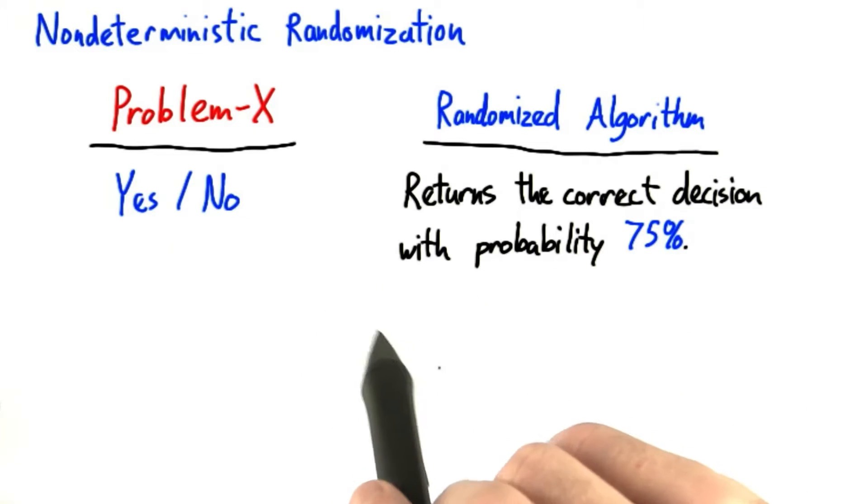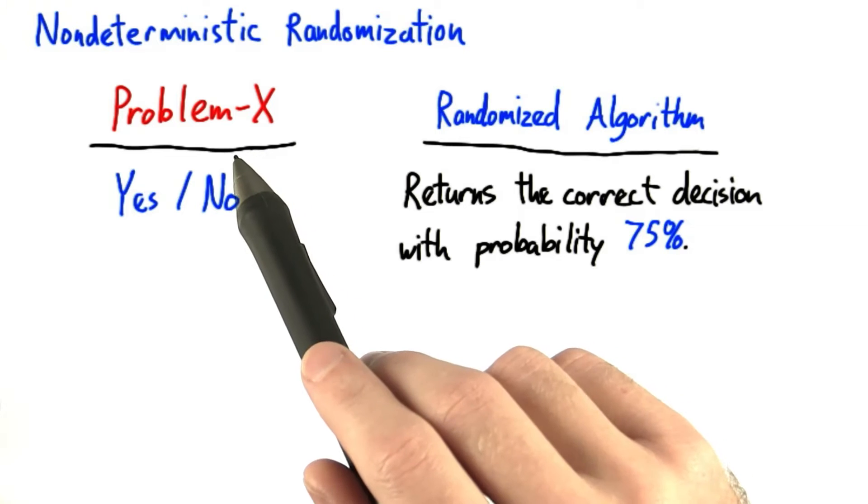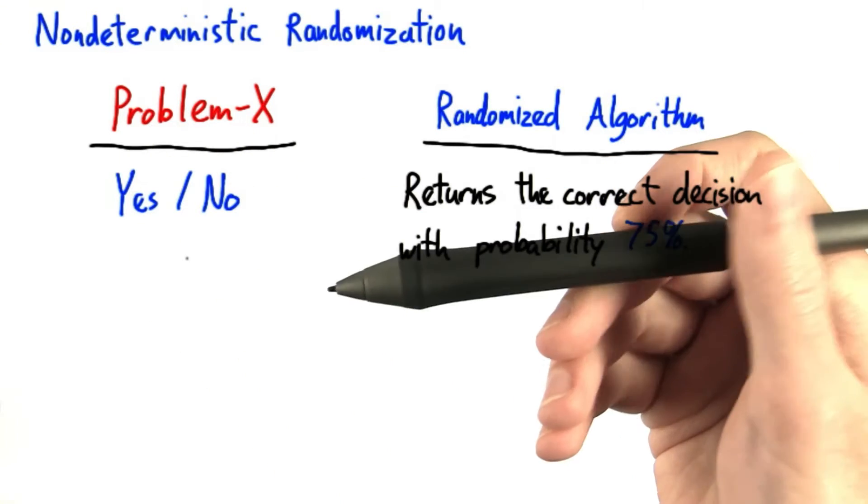Say we have a decision problem, and let's call it Problem-X. Since it's a decision problem, the solution to this problem is just either a yes or no answer.